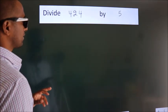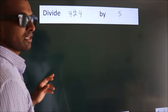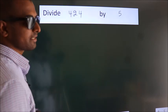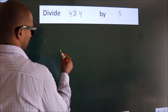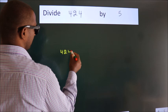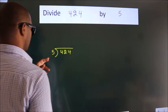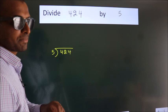Divide 424 by 5. To do this division, we should frame it in this way. 424 here, 5 here. This is your step 1.